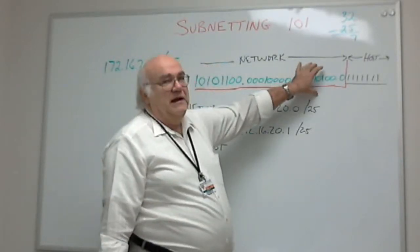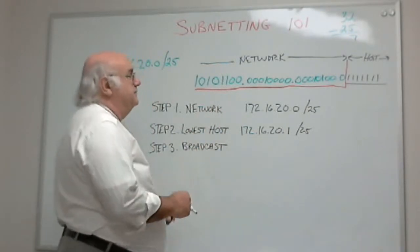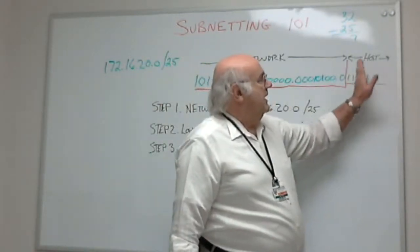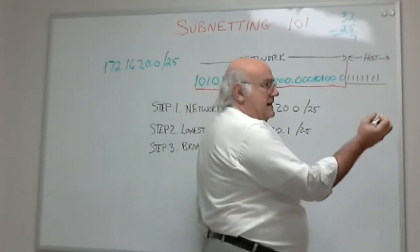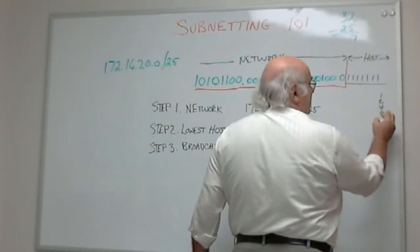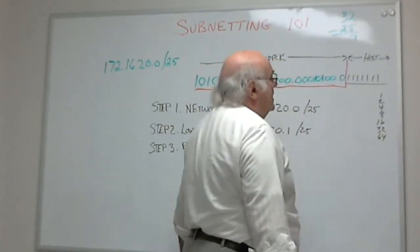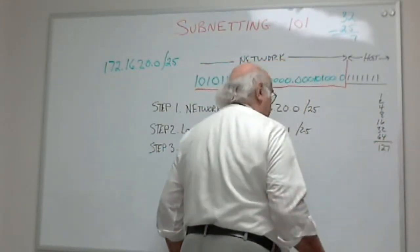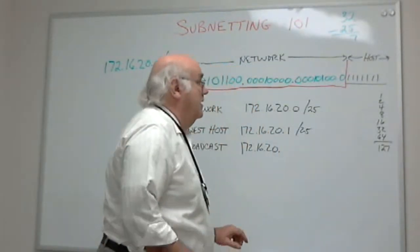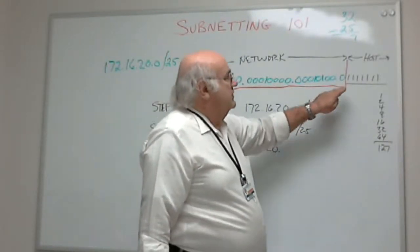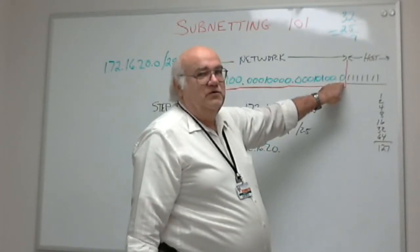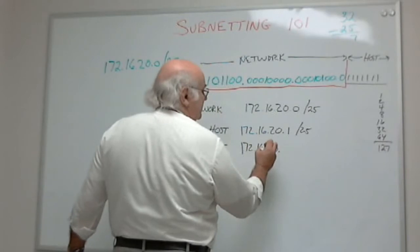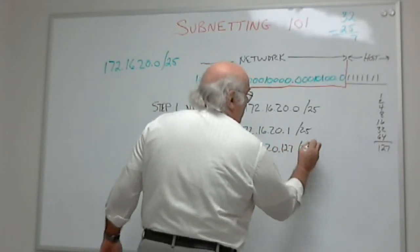Now I've got to calculate my broadcast address. Notice the 172.16.20 hasn't changed. We can never change that. But what is this number here for this byte? Seven bits are on. We need to add them up, right? 1, 2, 4, 8, 16, 32, 64. If I add all of them up, I come up with 127. But remember what I told you: you can always take the next positional value, in this case 128, and subtract 1. That will always give you your broadcast. So my broadcast then is 172.16.20.127 slash 25.